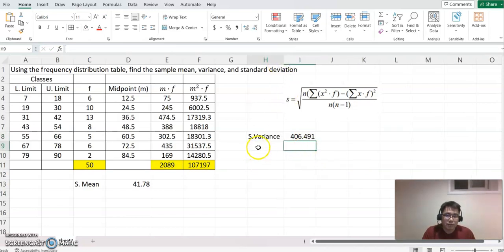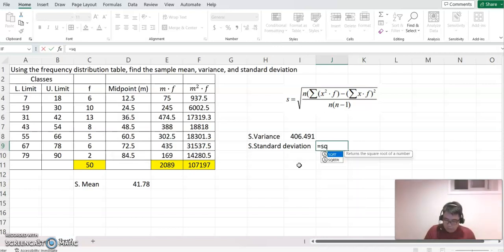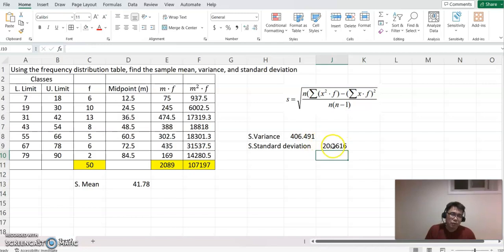What is the sample standard deviation? This value equals square root of the variance. In Excel, square root command is sqrt. So sqrt and select the variance value and enter. That will be our sample standard deviation, 20.1616.